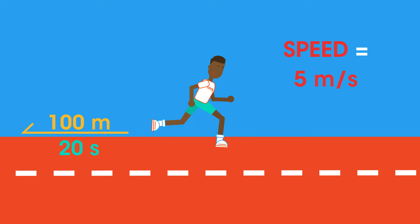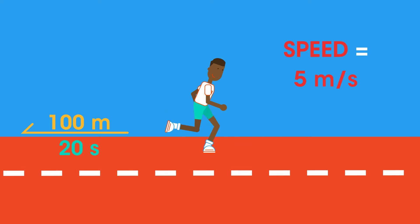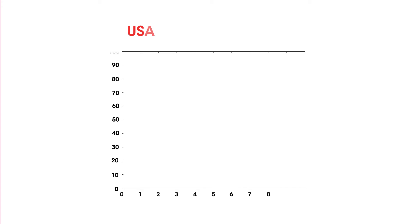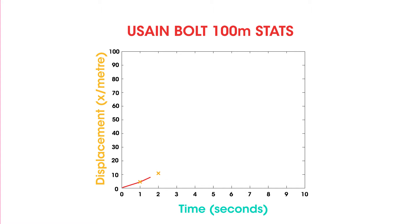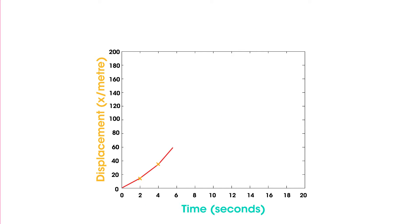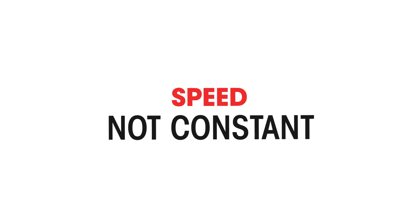However, this assumes that the man is running at a constant speed for the entire race, but this is never the case. Look at this graph of Usain Bolt — notice it takes time before he reaches his maximum speed. In a longer race, you might start off very quickly but end up slowing down as you get tired, and in some races runners will speed up right at the end. All of this means that our speed is not constant for the entire race.